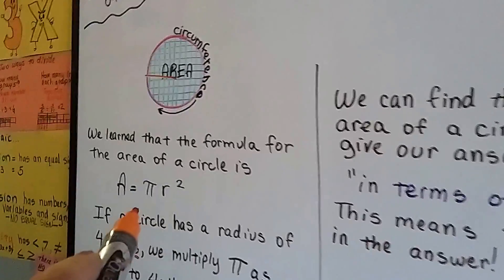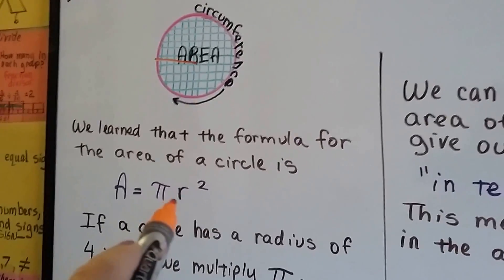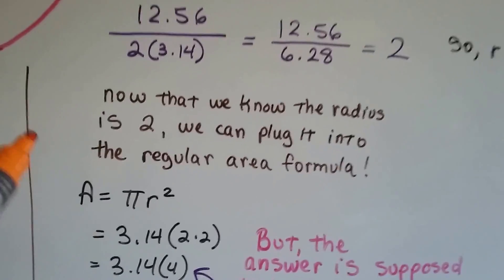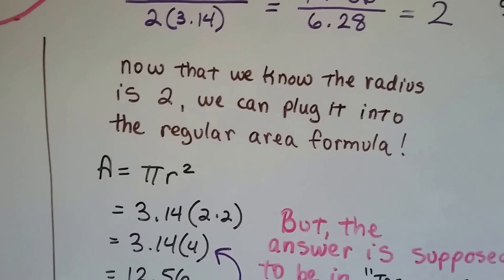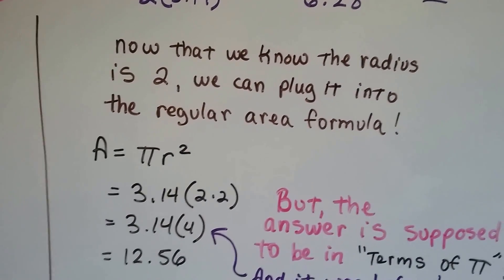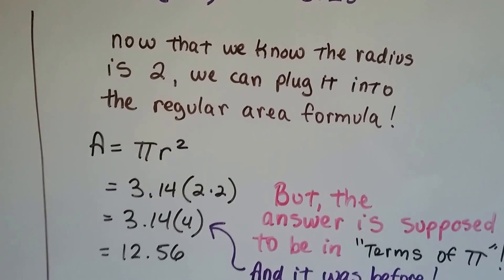Well, we know our area formula is pi times radius squared. Oh, we're getting there, aren't we? So now that the radius is 2, we can plug it into the regular area formula. Area equals pi r squared. See?